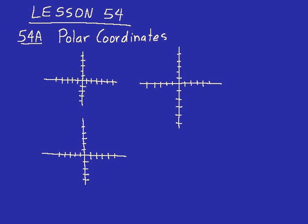Part A of this lesson is on polar coordinates. To understand those, it's a good idea to review what rectangular coordinates are. All it is is a way to identify a point — a different way to identify a point. For example, we had the point 4, 2. There's another way to write rectangular coordinates: when we do 4, 2, we go to the right 4 and up 2. So we could just write this as 4R plus 2U. That's another way to write rectangular coordinates.